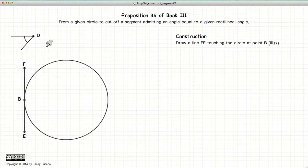So to do this, first we draw the line FE where it touches the circle at point B, and we use the methods described in Proposition 17 of Book 3 to do this.